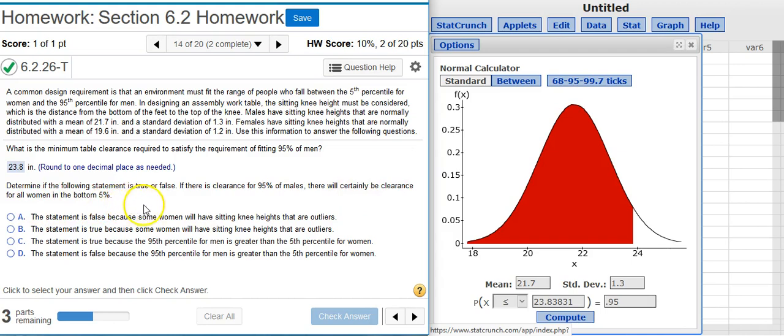Well, that's probably true because the bottom five percent for the women, their distribution, the mean is 19.6, so that's definitely less than the 23.8 that we have here. And the five percent for the women is going to be far less than the mean.